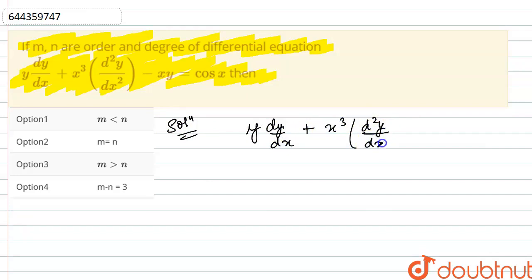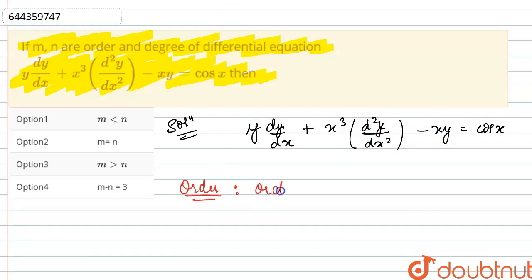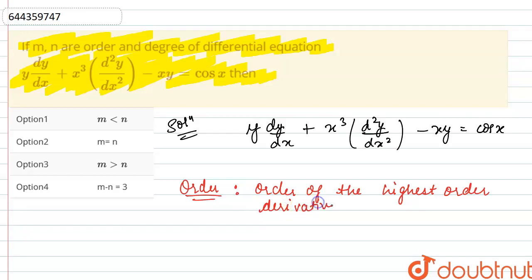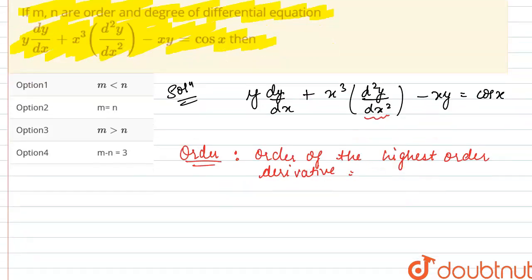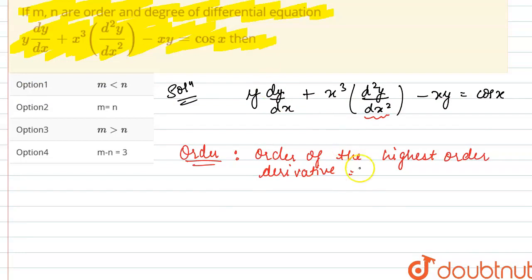d²y/dx² minus xy equals cos x. Firstly, we will find the order of this differential equation. The order of a differential equation is defined as the order of the highest order derivative present in the differential equation. The highest order derivative present in this differential equation is d²y/dx², which is a second order derivative. So the order for this differential equation will be equal to 2. And order is m, so the value of m will be equal to 2.